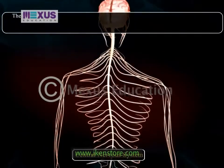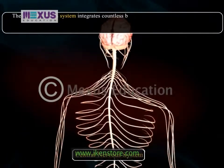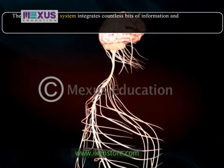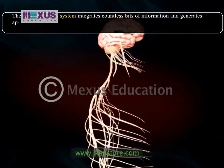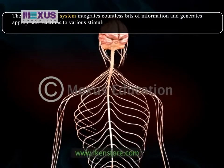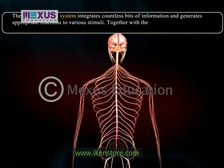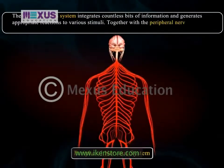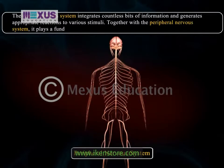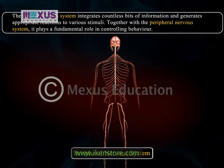The central nervous system integrates countless bits of information and generates appropriate reactions to various stimuli. Together with the peripheral nervous system, it plays a fundamental role in controlling behavior.